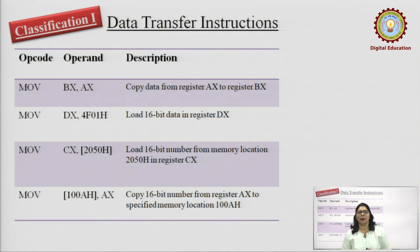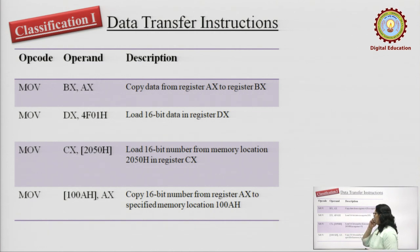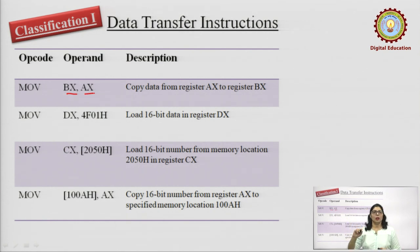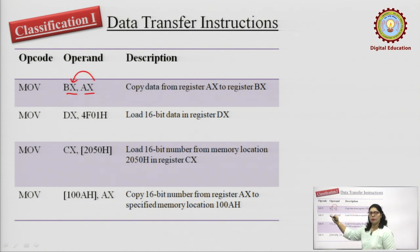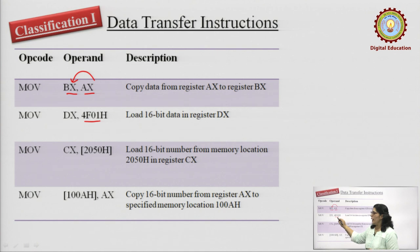First, let us talk about data transfer instructions. I have presented only a few examples here, but you can refer to your reference book for the remaining instructions. The first example is MOV BX, AX. Here, both are 16-bit registers, so we are copying 16-bit data from AX into BX. Then, the next example uses immediate addressing mode: MOV DX, 4F01h — this is a random number being stored directly into the DX register, which is a 16-bit register.